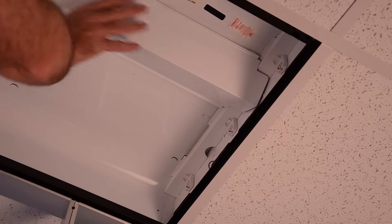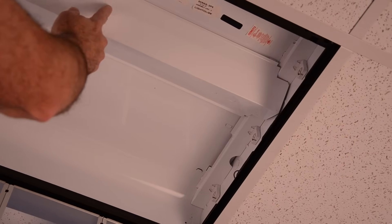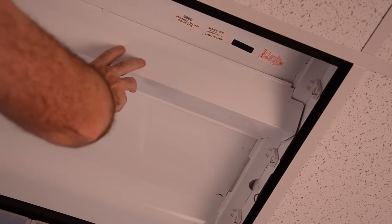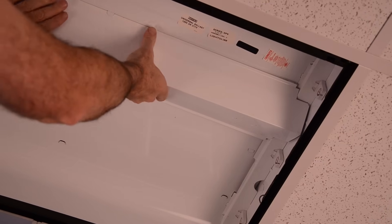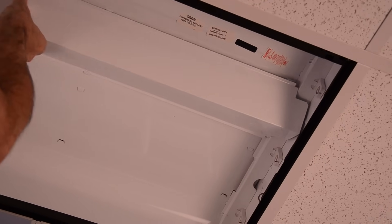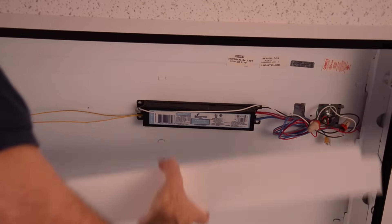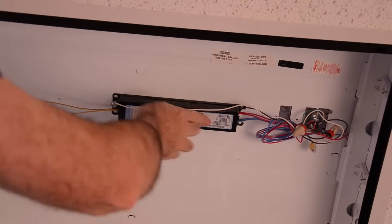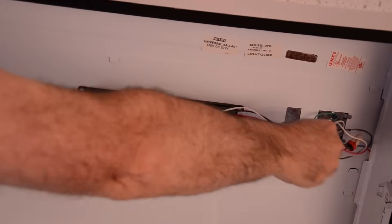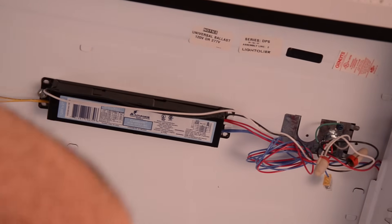The next step is we're going to take this cover off. Up inside here is the ballast that runs this light fixture, this fluorescent fixture. So this is simple. Just squeeze it together like so. And it comes right out of the light fixture. And up underneath it is the ballast and the wiring for the fluorescent tubes.